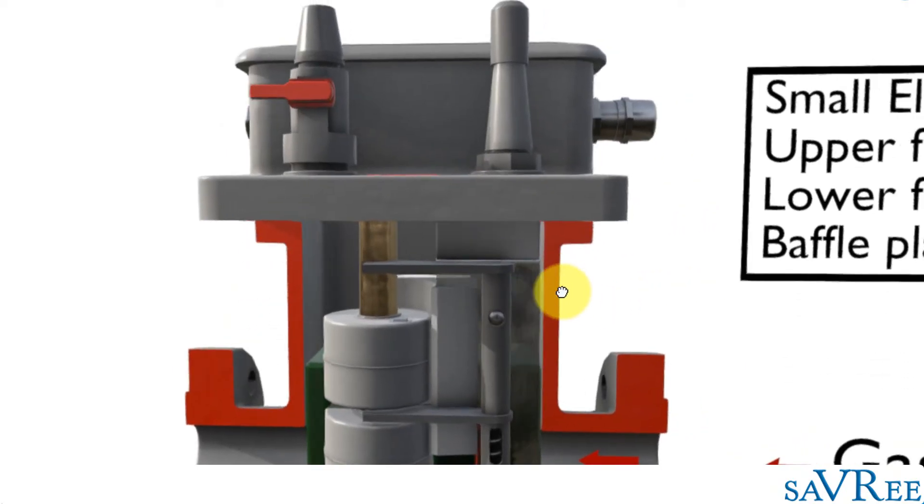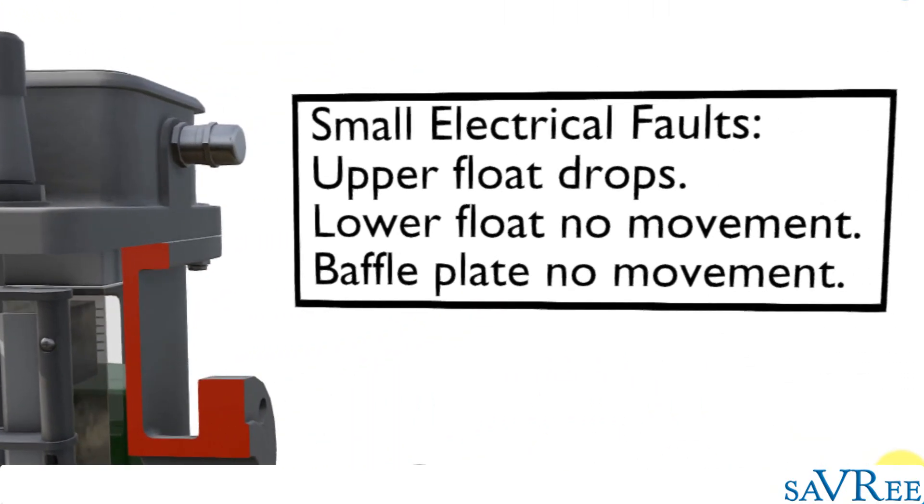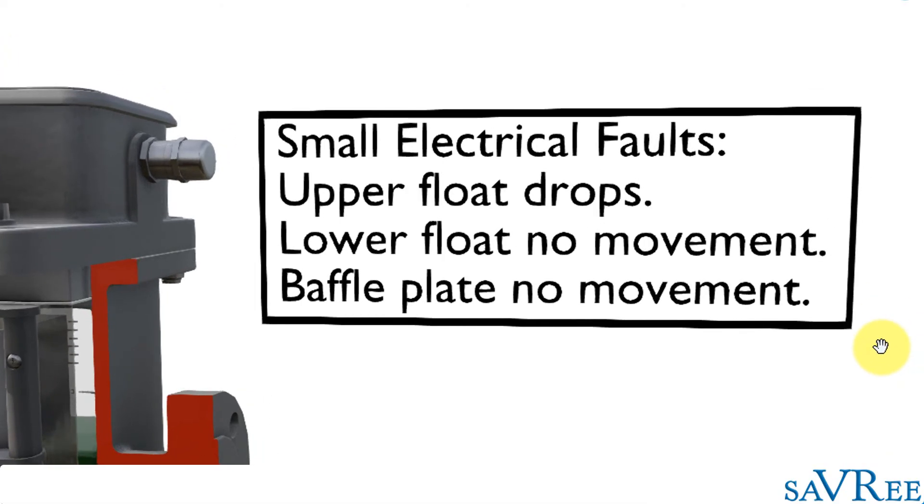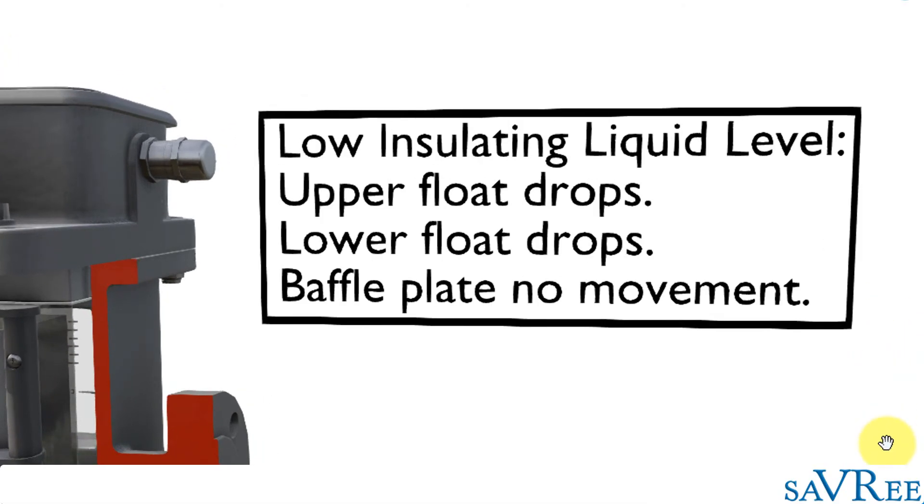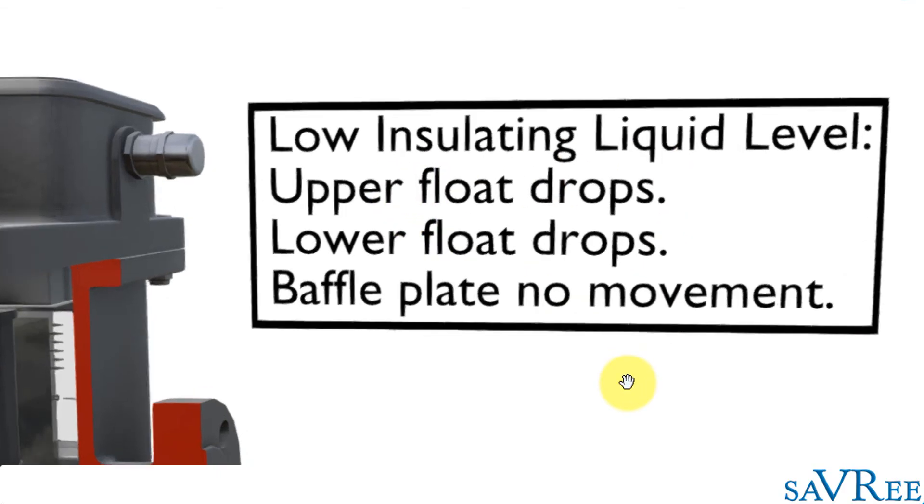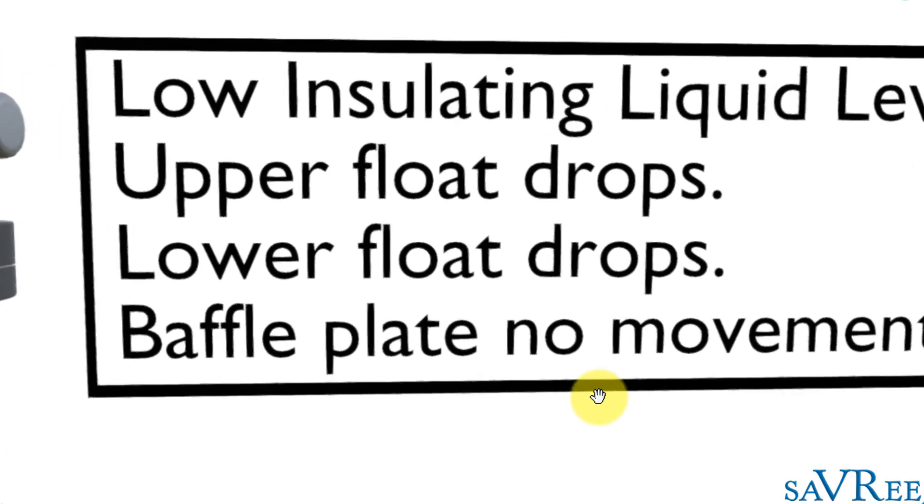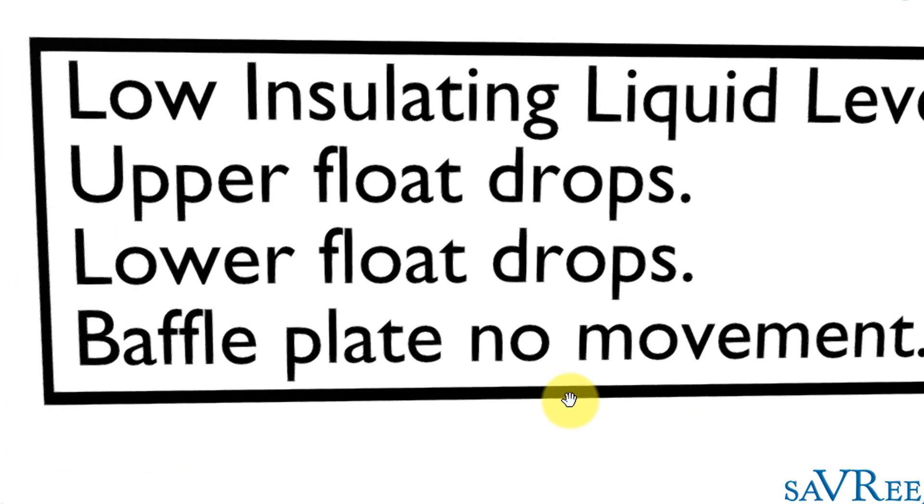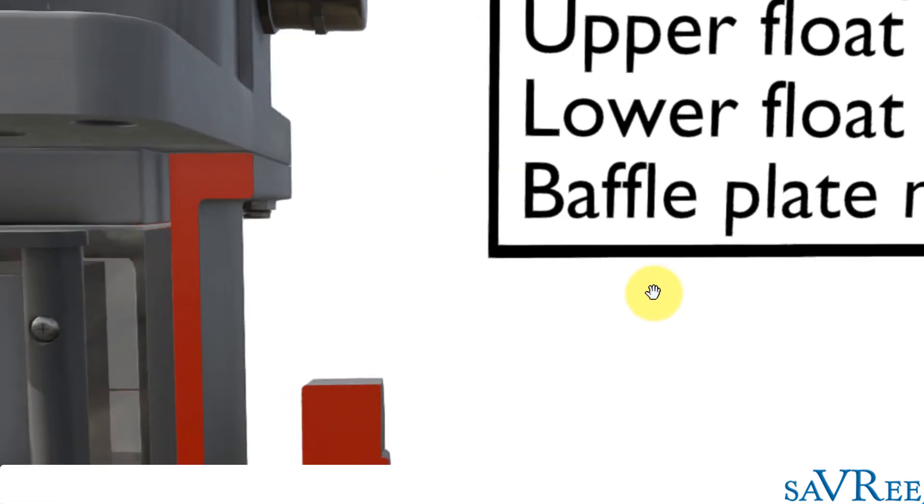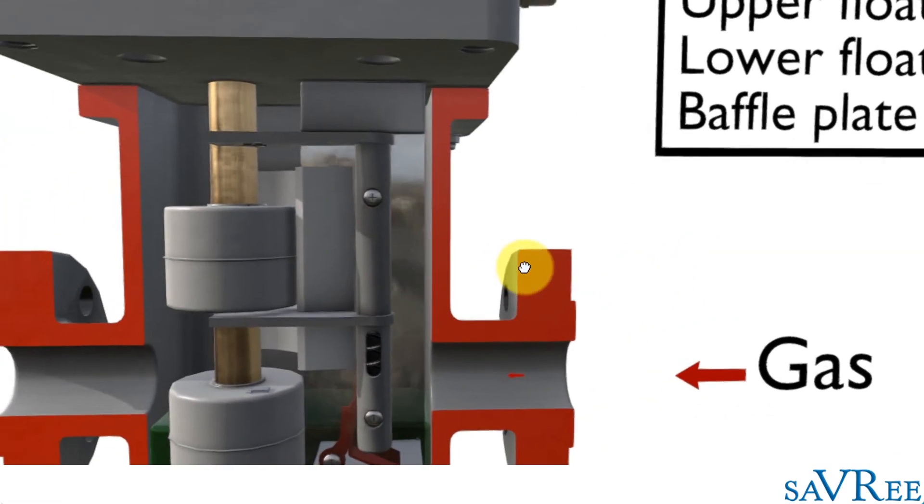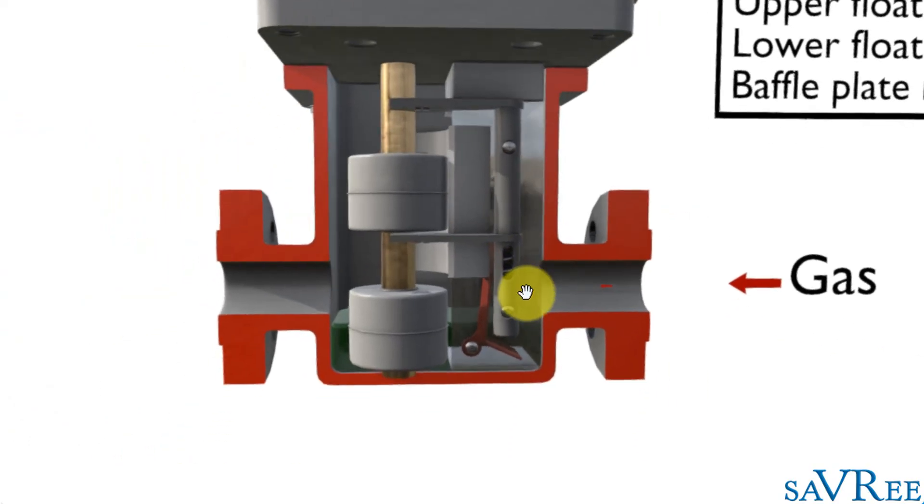If we go back out, we've got one more type of fault. Low insulating liquid level, upper float drops, lower float drops, and baffle plate, no movement. So different combination here, but a different kind of fault. The baffle plate we can ignore because it's only used for one type of fault.